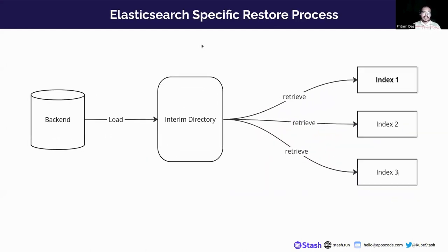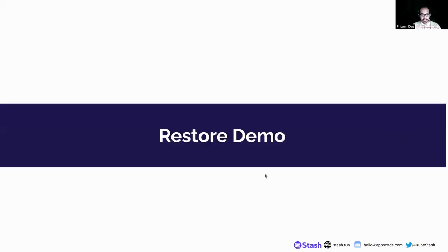The Elasticsearch-specific restore flow is exactly opposite to the backup flow. We use an interim directory here as well — first we load the snapshots from the backend into the interim directory, which is a Kubernetes persistent volume, and then the data is retrieved into the indices of the DB instance. Now I will show the restore demo.